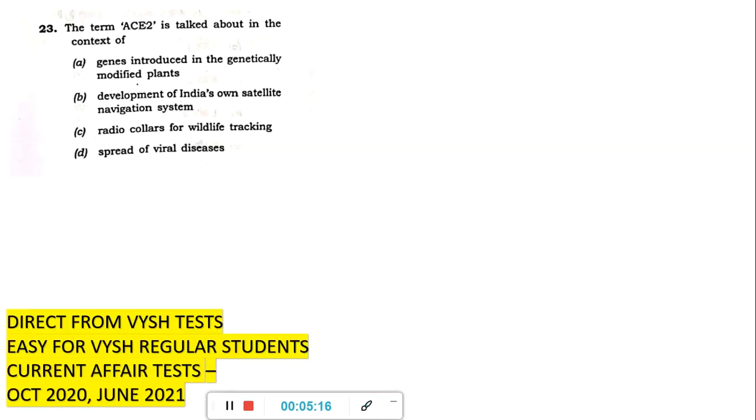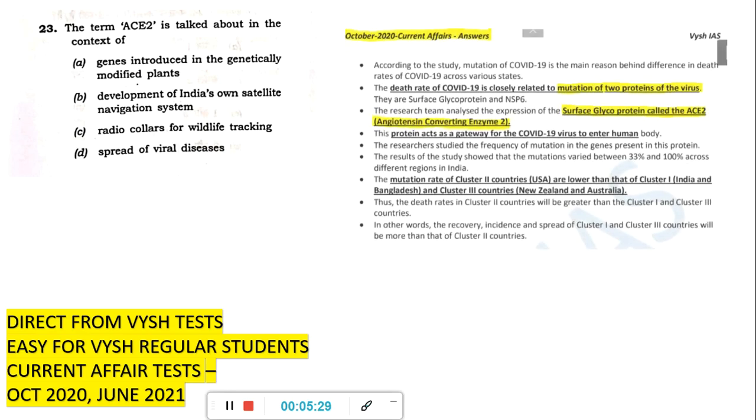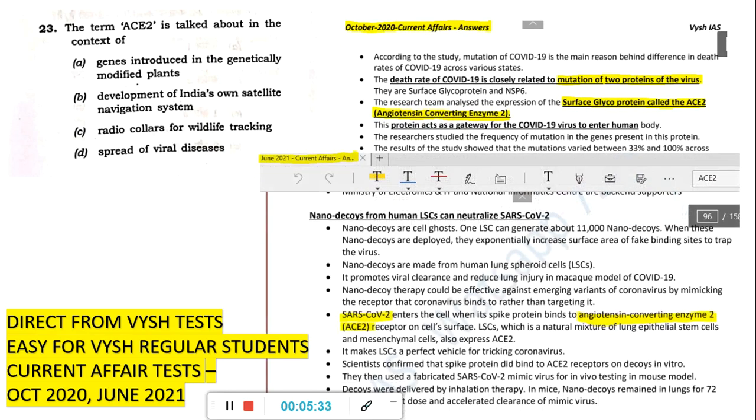Now, easy questions we'll see. The term ACE2 is talked about in the context of what? The term ACE2 was there in news almost every month because of COVID. It was there almost every month. In my magazine also, two extremes of 2020 and 21 - 2020 October and 2021 June, whichever magazine you have read, you could have solved it because angiotensin converting enzyme 2 was there in context of COVID-19. So it was expected to be asked and this was asked also. The answer is spread of viral diseases.